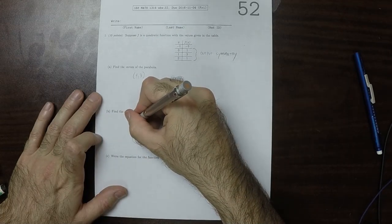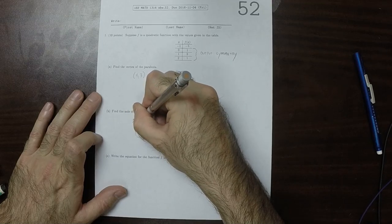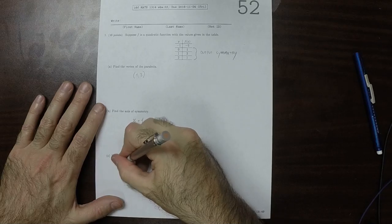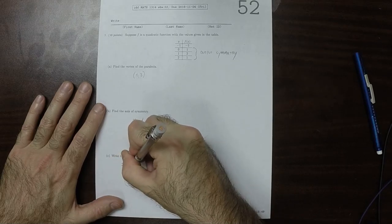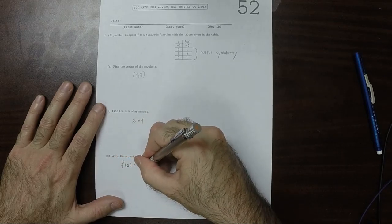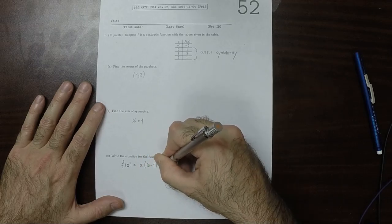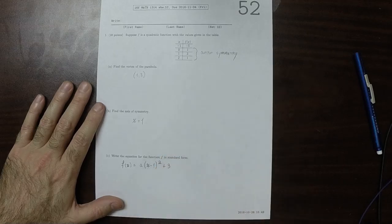And the axis of symmetry goes through the vertex, so it is x is 1. So what we do know because of that is that f of x must be equal to a times x minus 1 squared plus 3 for some a.